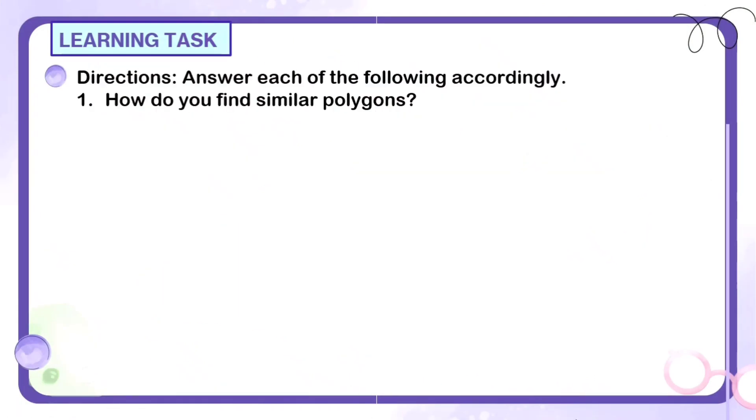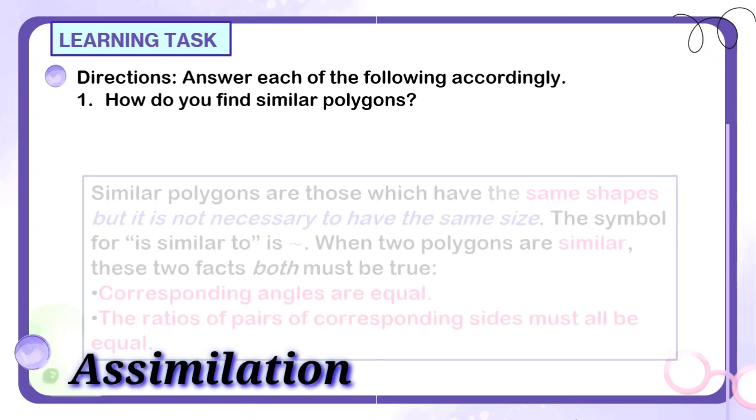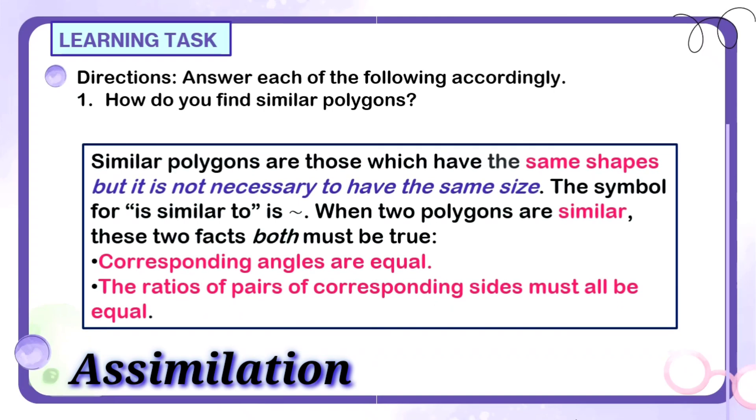So your learning tasks under assimilation. This is the question: How do you find similar polygons? So paano nga ba natin nasasabi na similar yung ating polygons? Okay, similar polygons are those which have the same shapes, but it is not necessary to have the same size. The symbol for is similar to is this one, and when two polygons are similar, these two facts both must be true.